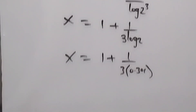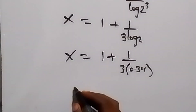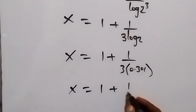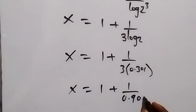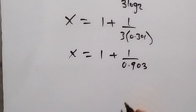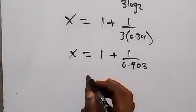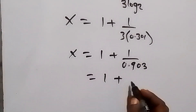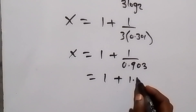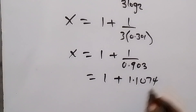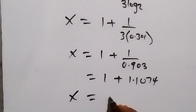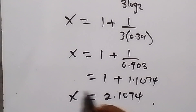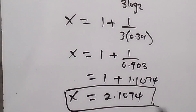Solving, we have x equals 1 plus 1 over 0.903. Dividing 1 by 0.903 gives 1.1074, so x equals 1 plus 1.1074. Therefore x equals 2.1074. We can also solve this a second way.